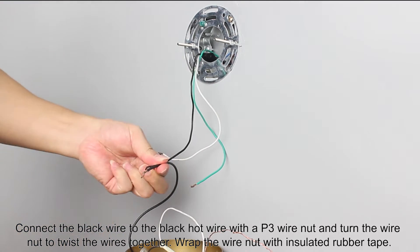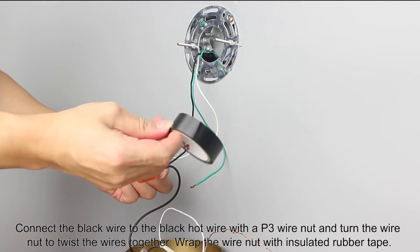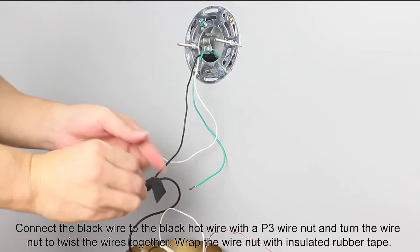Connect the black wire to the black hot wire with a P3 wire nut and turn the wire nut to twist the wires together. Wrap the wire nut with insulated rubber tape.